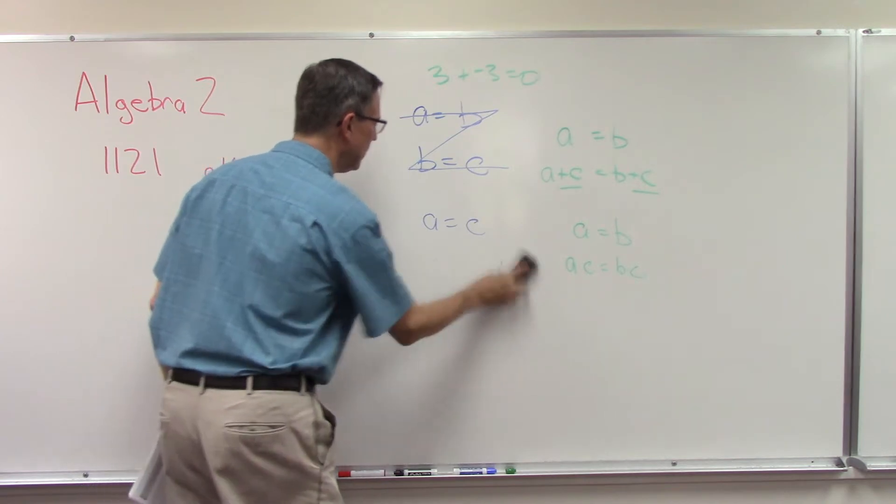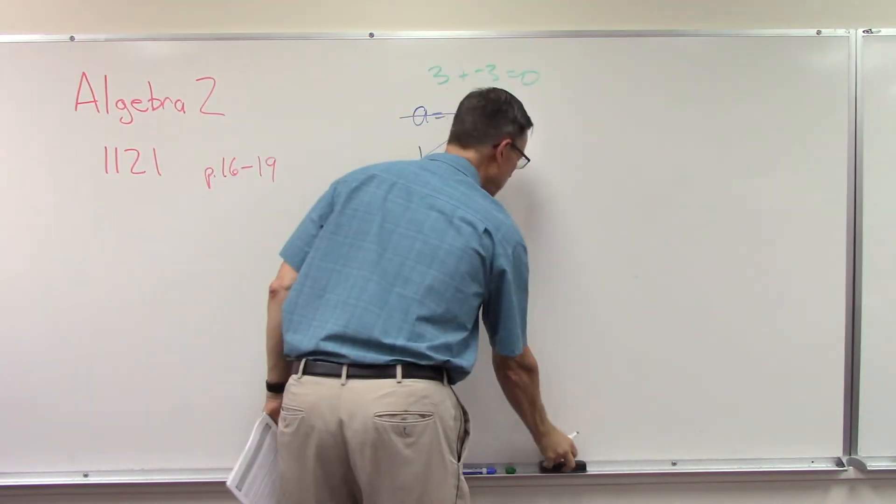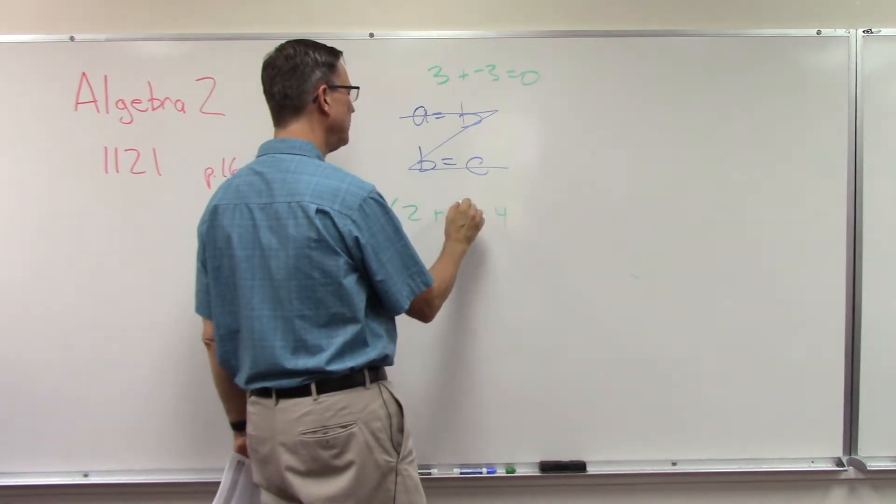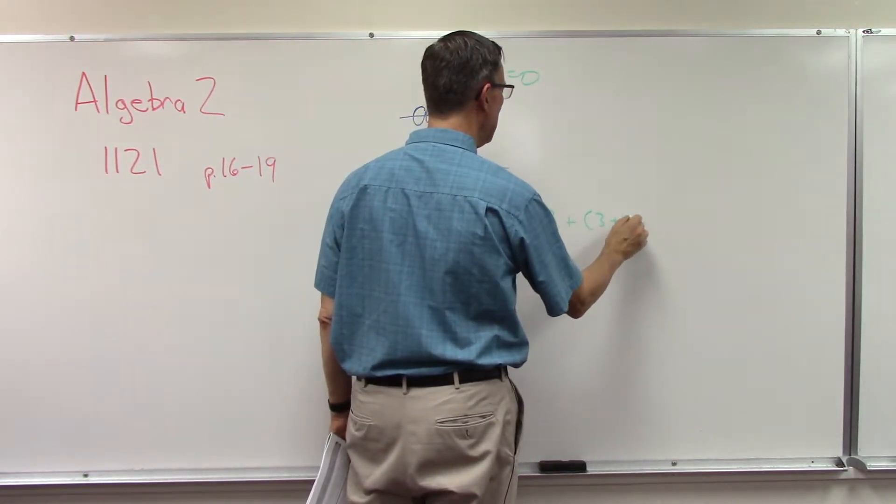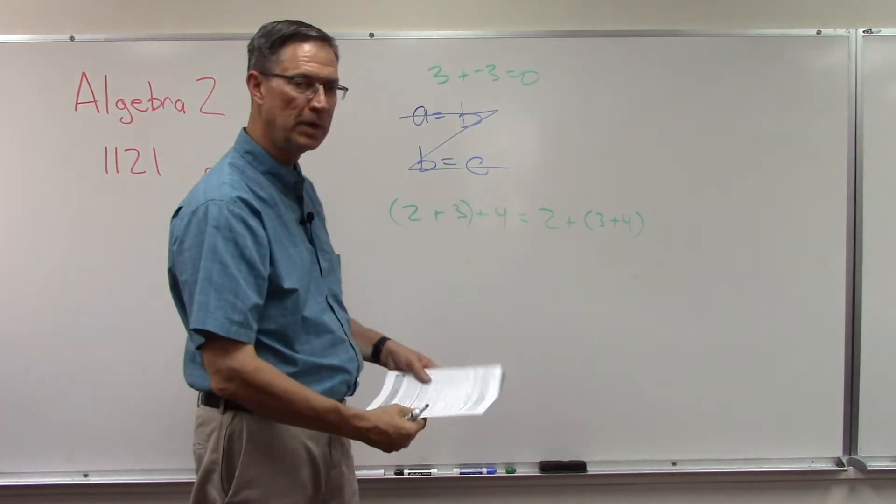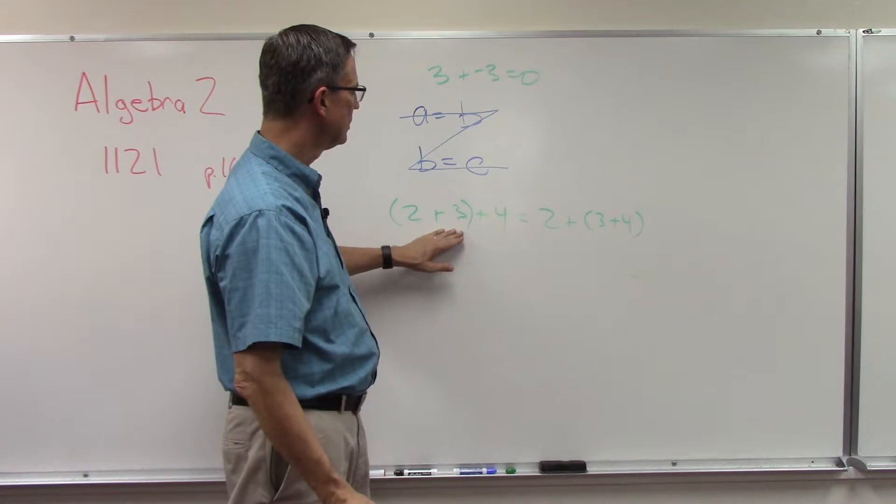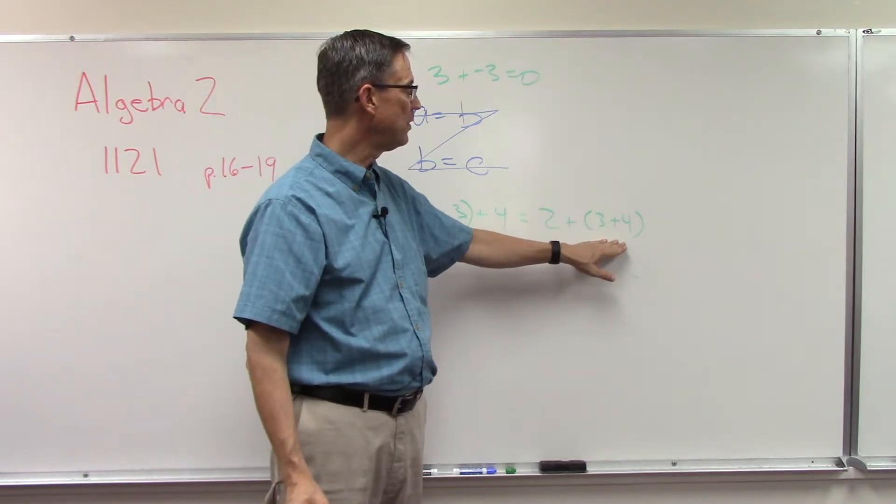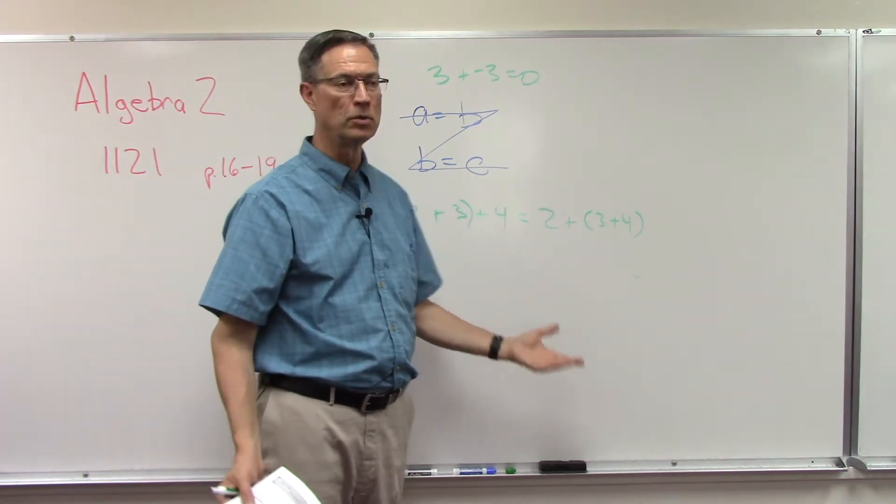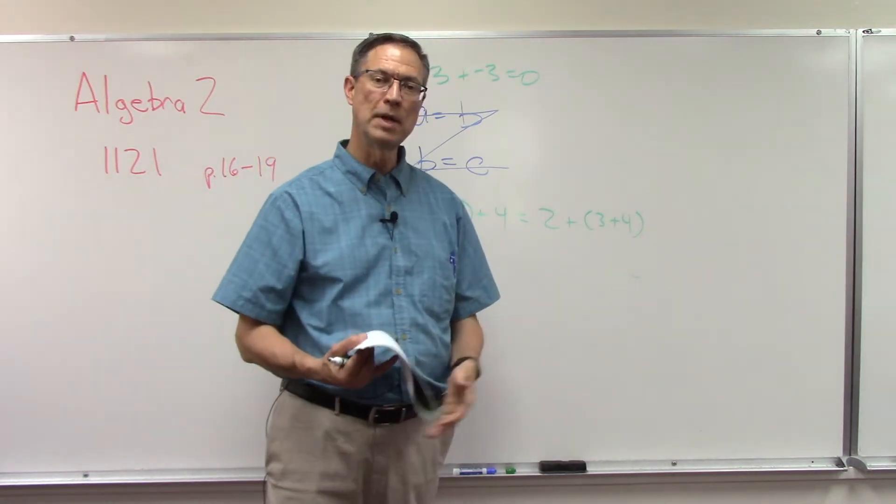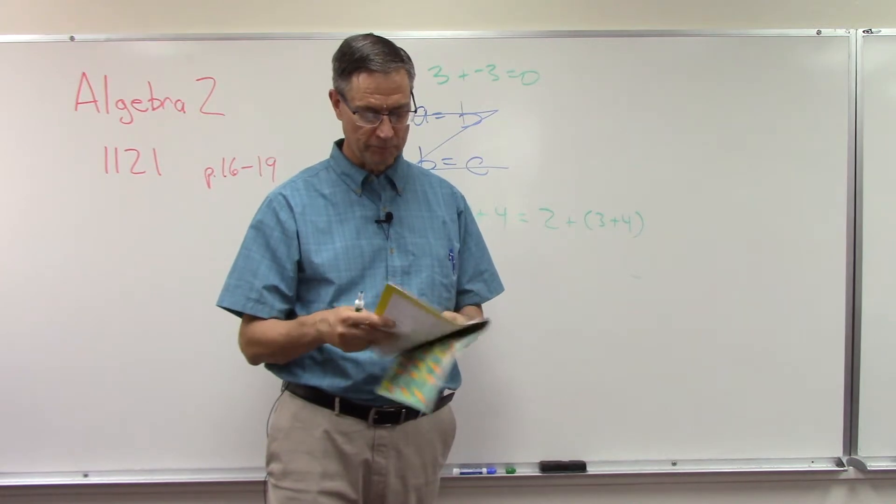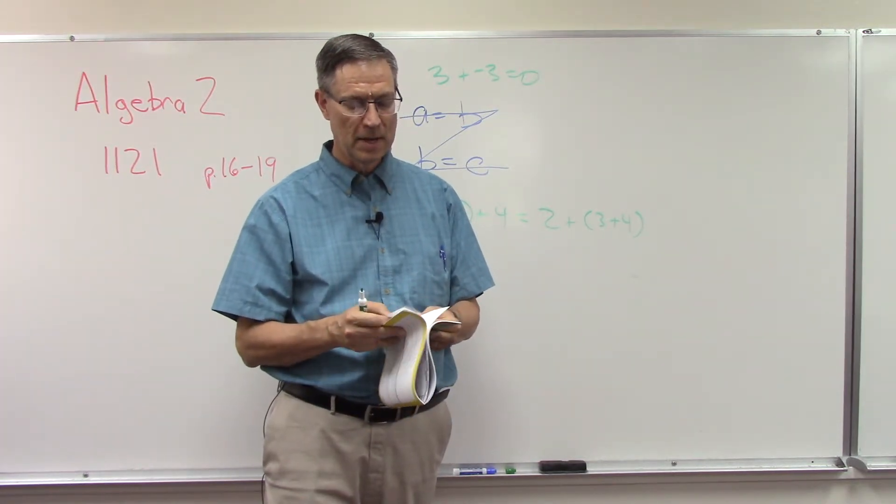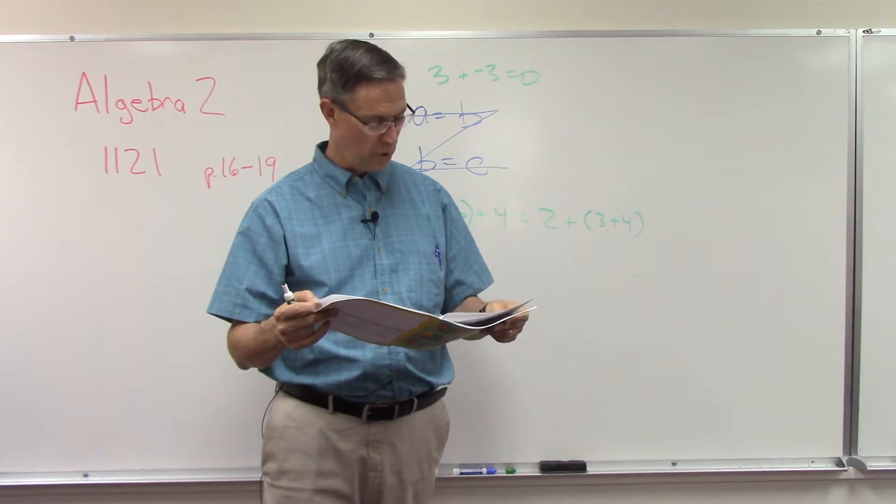The associative axiom for addition: if we have a number like two plus three plus four, if I put parentheses around these two, it's going to give me the same answer as if I put parentheses around the three and the four. So this would be five—solve that first—five plus four is nine. Here I do what's in the parentheses first. I've associated them together and that gives me seven. Two plus seven, same answer: nine. So it doesn't matter. I have the same numbers; I'm just associating them differently, and it's still equal. That's why it's called the associative axiom for addition. They give you some things to do on page 18.